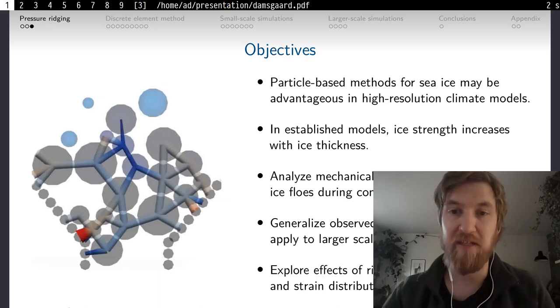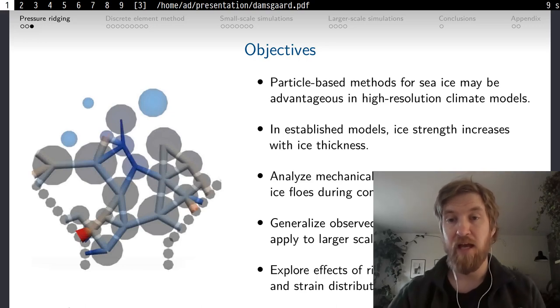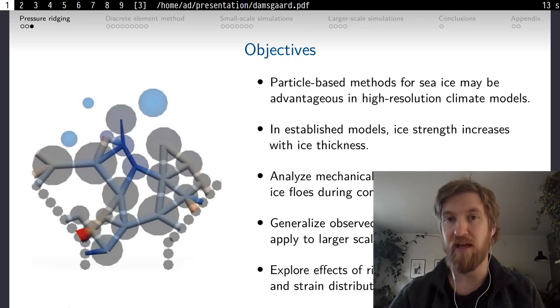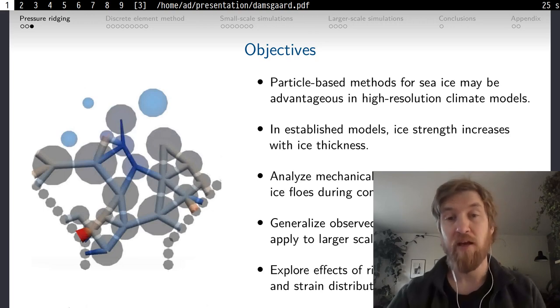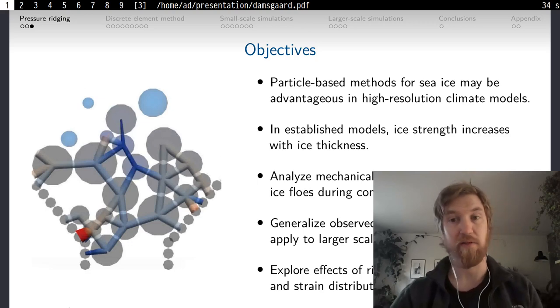Traditional continuum sea ice models are based on the assumption that every cell consists of many ice flows. However, the resolution of climate models is increasing, and as such the continuum assumption comes into question as the individual cell sizes become smaller and approach the size of individual ice flows. For that reason, there are many initiatives now to investigate the potential of granular dynamics methods to simulate sea ice in coupled climate models.